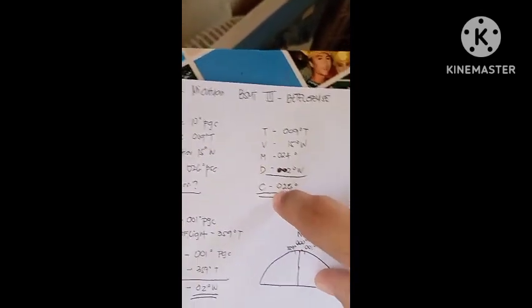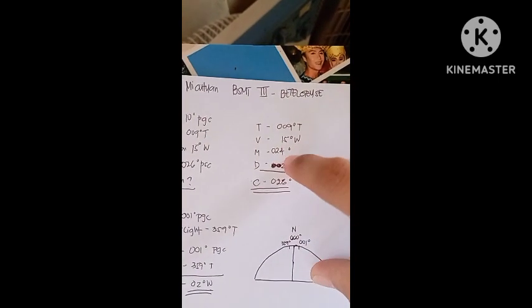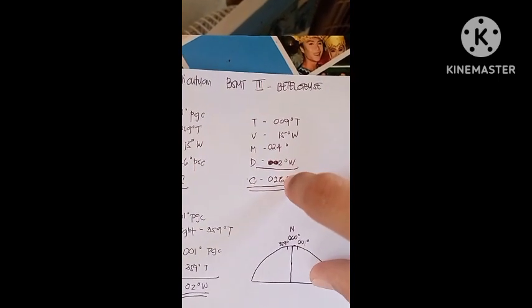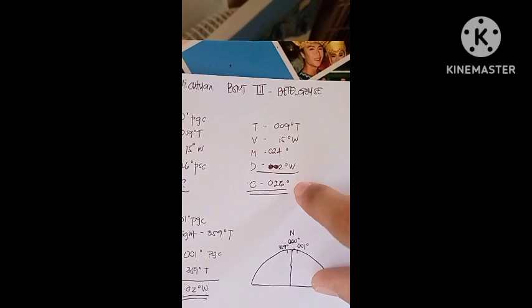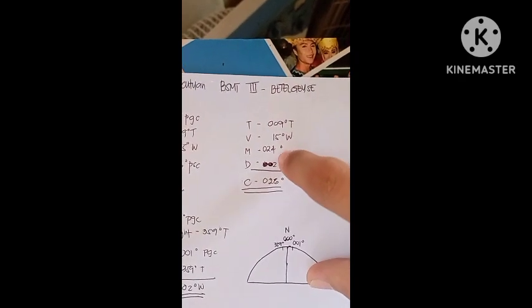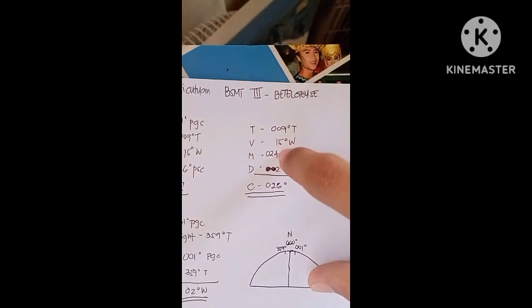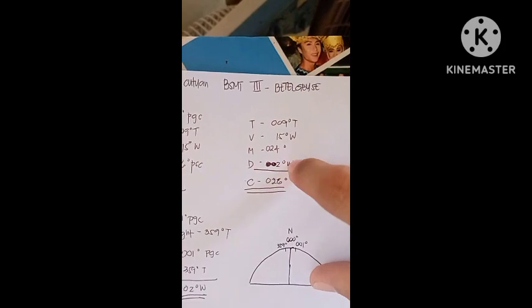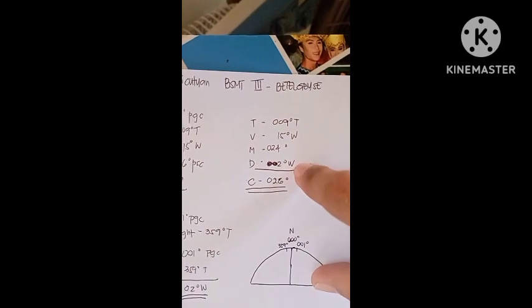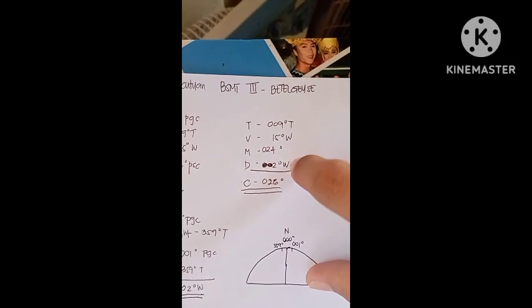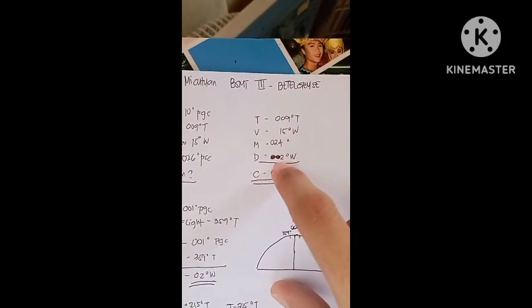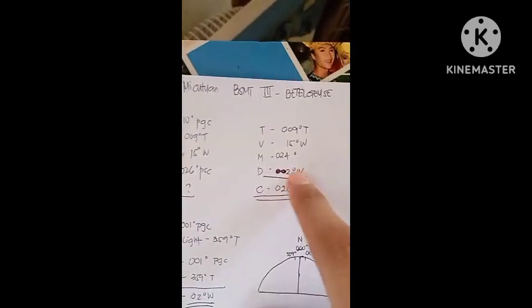We're going to add, and we have a given of 026 degrees per gyro compass. So if we need to get 026 degrees and we have 024, we have to add 2 degrees west. So our deviation is 2 degrees west.